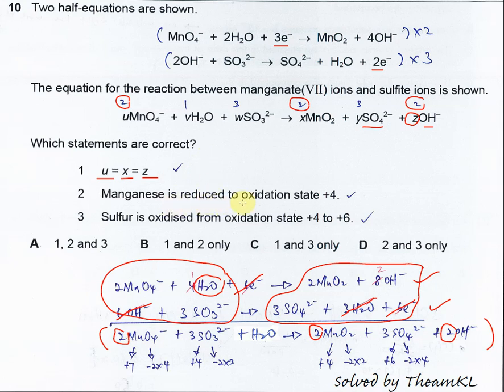Second, manganese is reduced to oxidation state positive 4. So the manganese after reaction is from manganese dioxide, so it means from here to here.